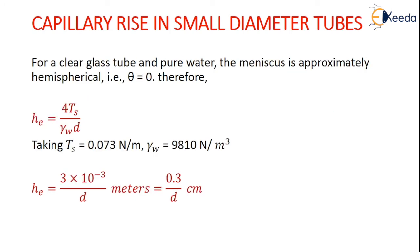So for a clear glass tube and pure water this meniscus is approximately hemispherical, that is θ equals 0. Therefore, this will reduce to h_c equals 4T_s by γ_w d because cos θ is 1.